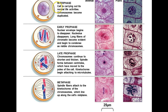Up here at the top we have interphase, and during interphase you notice you have an intact-looking nucleus. You can see the nucleolus within there, and the nuclear envelope is intact. Also, since this is an animal cell, you have centrioles that are migrating to either end of the cell.